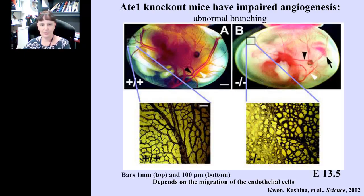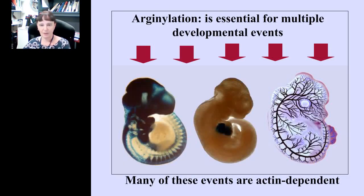Another picture shows yolk sacs from wild-type and knockout embryos stained with the same blood vessel antibody. In wild-type, the yolk sac has a very orderly, tree-like structure of blood vessels. In the knockout, a similar area of the yolk sac is much more disorganized. This process also depends on migration of endothelial cells. We are seeing several defects in these embryos which suggest an impairment in cell migration, so we started looking deeper into the defects in these mice.